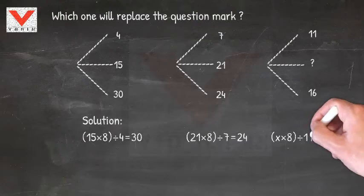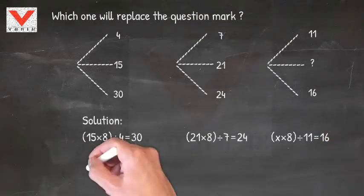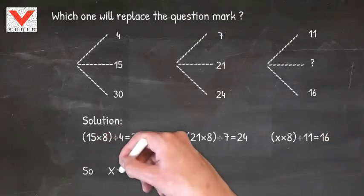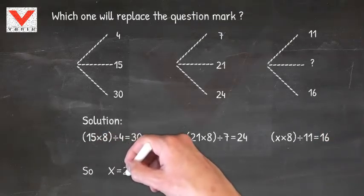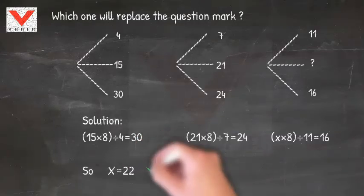In the last stage, if we follow the same pattern, then x is equal to 22. Hence the answer is 22.